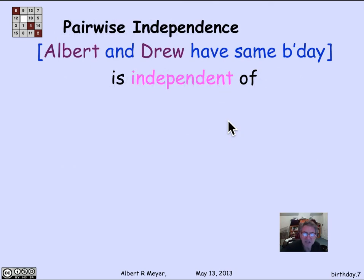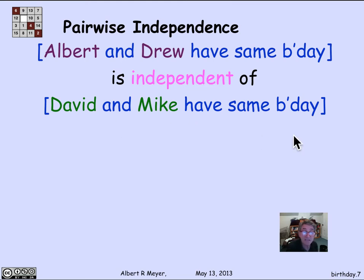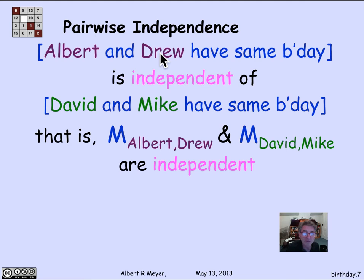The key observation is that the indicator variables are pairwise independent. Consider the indicator for the event that the i-th and j-th people — call them Albert and Drew — have the same birthday. Compare that to another pair, Dave and Mike, and whether they have the same birthday. Are these two events independent? We're assuming that Albert's birthday is independent of Drew's, is independent of David's, is independent of Mike's — each person is chosen independently. So it's obvious that two pairs that don't overlap have nothing to do with each other.